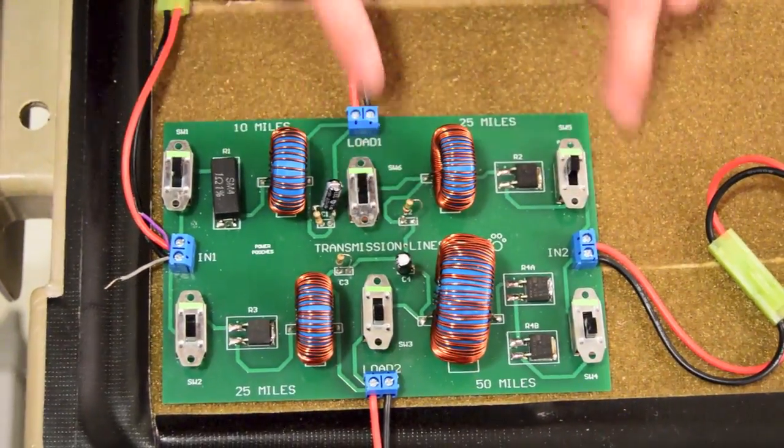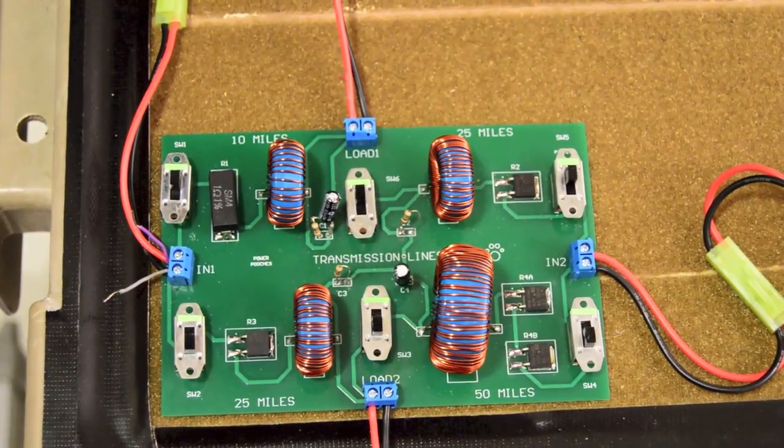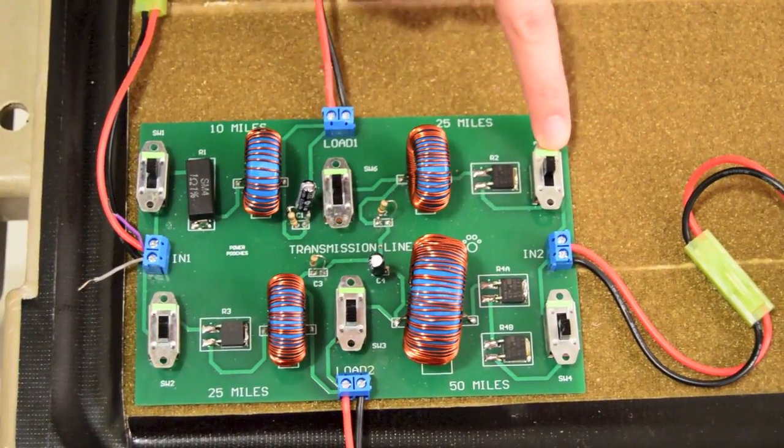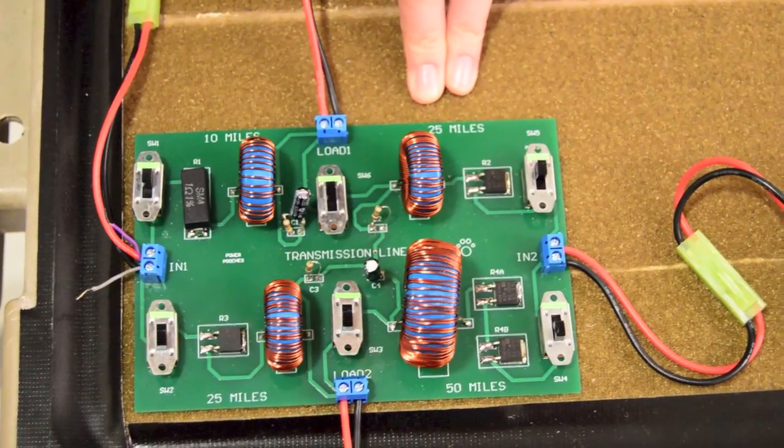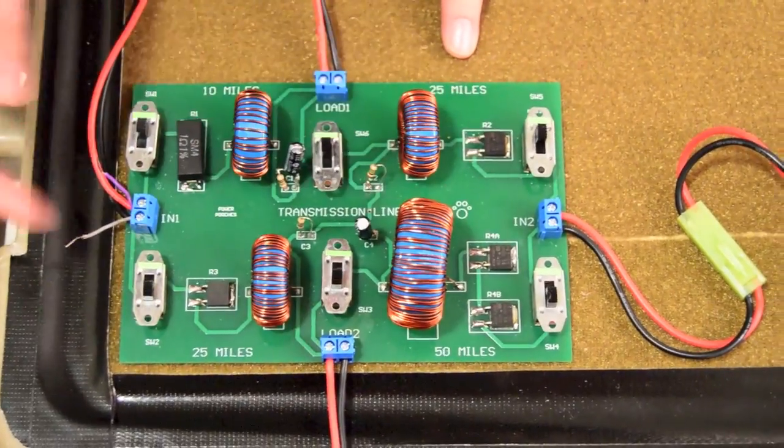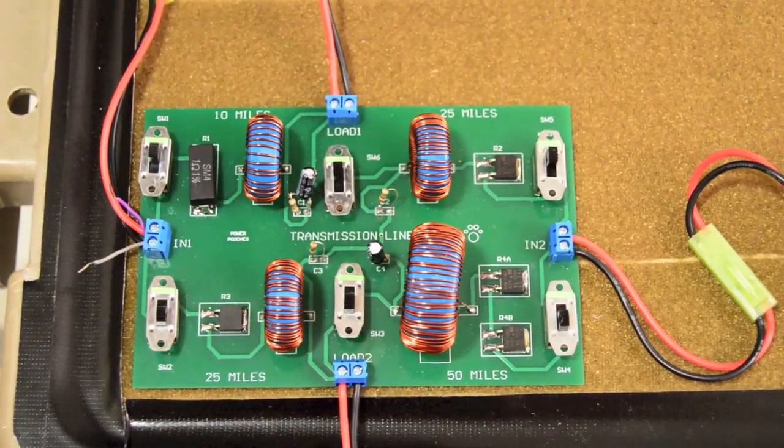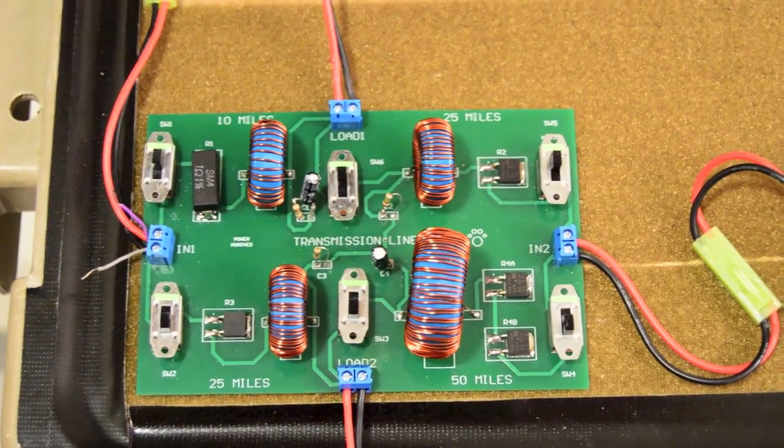Using these switches, you can change what total length you're trying to simulate. For example, right now via the green tabs you can see that the top line is turned on, so you have a 10 plus 25—a 35-mile line simulated. You can go across on each branch, go up and over. There are a lot of different configurations that you can make.